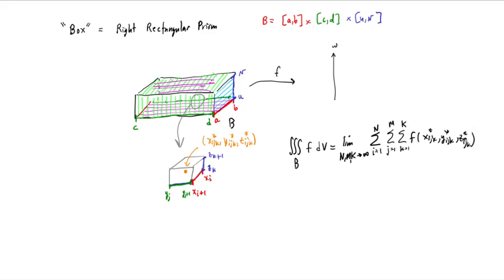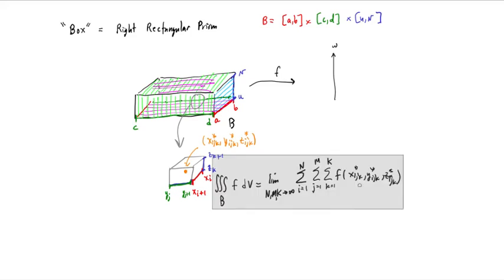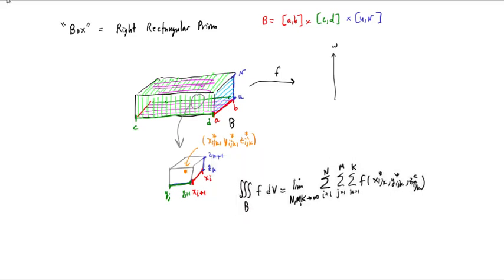And finally, we need to multiply by the volume element. The volume element here, the volume of this small rectangular prism, is just length times width times height. So it's going to be delta x times delta y times delta z. This is going to be delta xi times delta yj times delta zk.